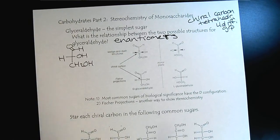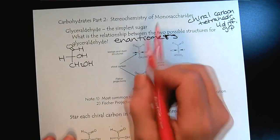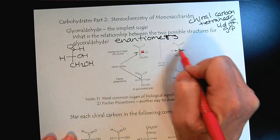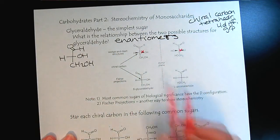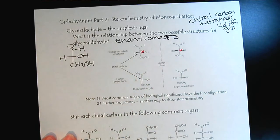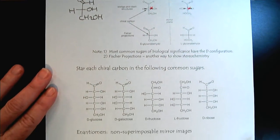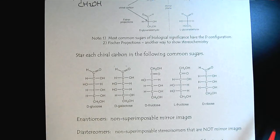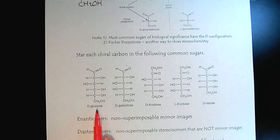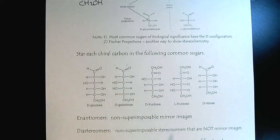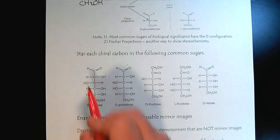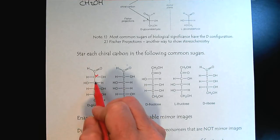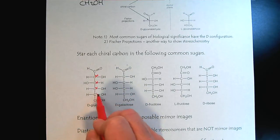And so if we wanted to, we could star these are our chiral carbons. And so we would describe this as our pair of enantiomers. So now let's look at some of those sugars that we were introduced to in the last tutorial. Glucose, galactose, fructose, and ribose. And let's apply our knowledge of chirality.